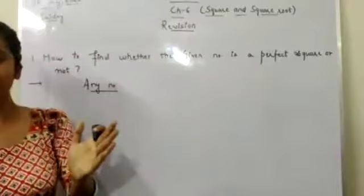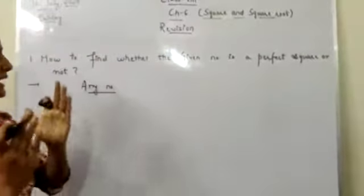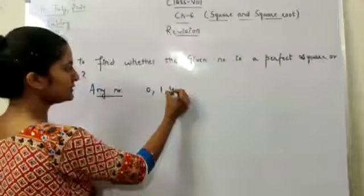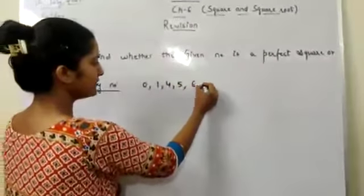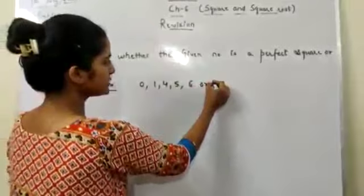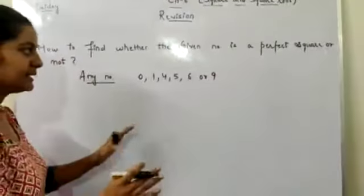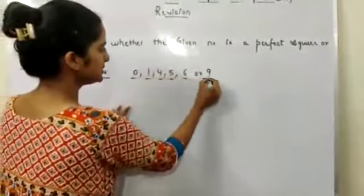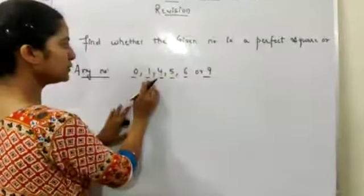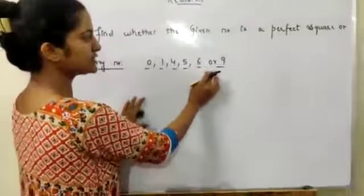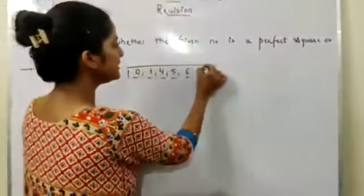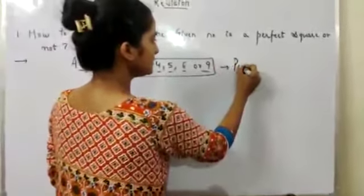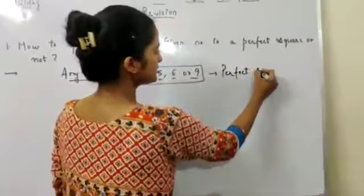What we have to remember is: if a number ends with 0, 1, 4, 5, 6, or 9, then that number will be a perfect square. Whenever a number ends with these unit digits — 0, 1, 4, 5, 6, or 9 — then that number will be a perfect square.